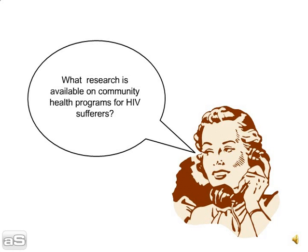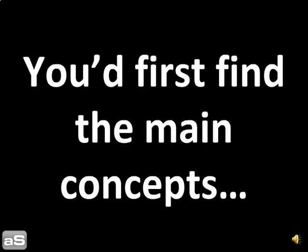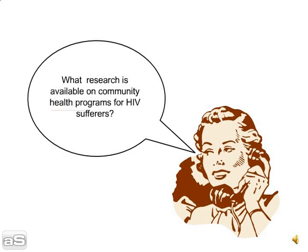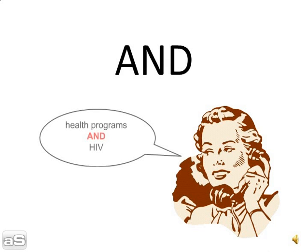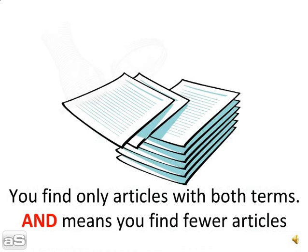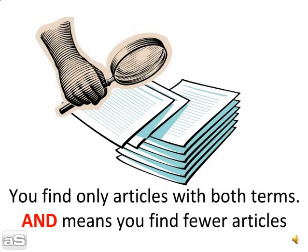So if you wanted to know, you'd first find the main concepts — that's health programs and HIV. Main concepts are joined with AND. This means you find only articles with both terms. AND means you find fewer articles.